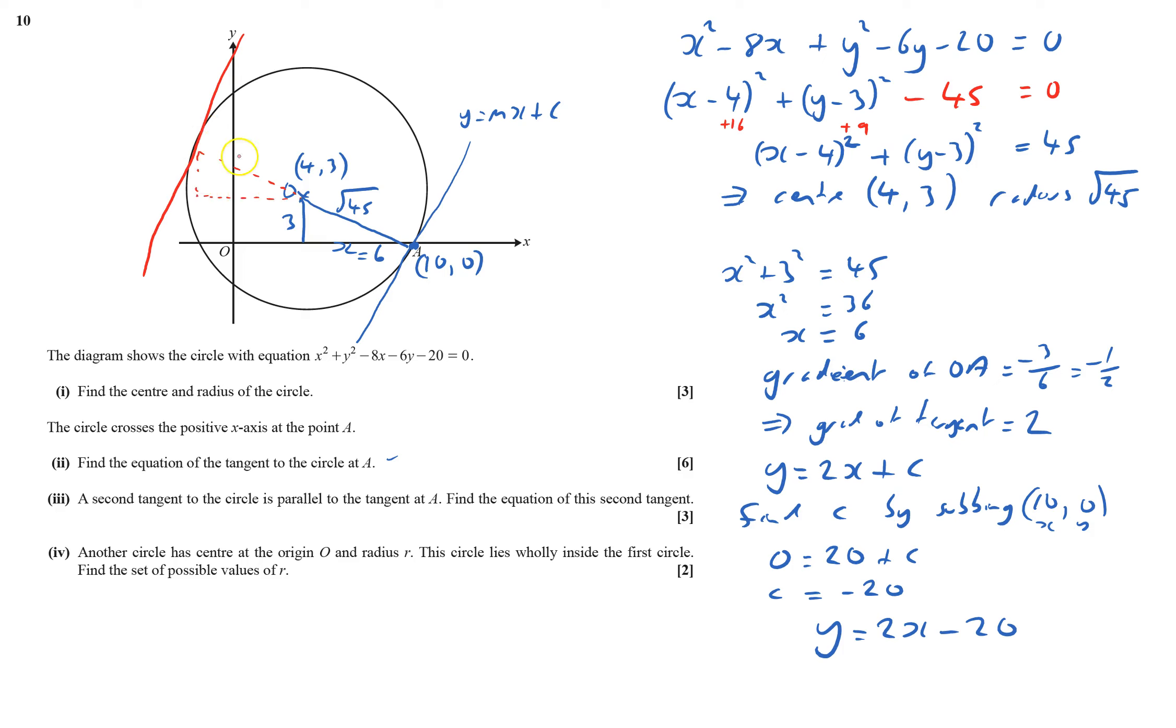It's going to go across 6 and up 3 more, so 6 across will be minus 2, and it'll be 6 up. So we have y equals 2x plus c, and we'll substitute in that point (-2,6).